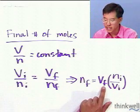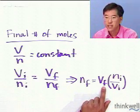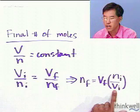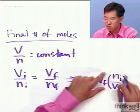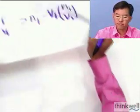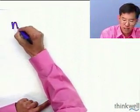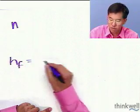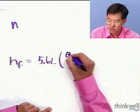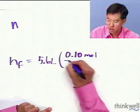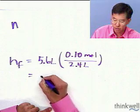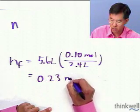Now we can plug in. We know the final volume was 5.6 liters, the initial number of moles was 0.10 mol, and the initial volume was 2.4 liters. Plugging in, nf equals 5.6 liters times 0.10 moles over 2.4 liters, and that equals 0.23 moles.